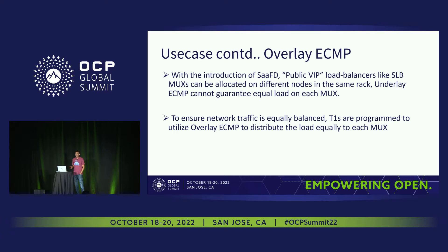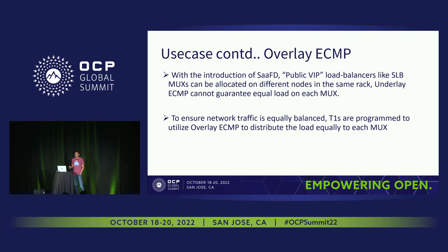The challenge with traditional underlay routing ECMP is that we can't effectively load balance traffic to multiple load balancers under the same Tor. If we use underlay network routing, packets will be load balanced using a standard five-tuple, land on the same Tor, and we can't distribute traffic across different load balancers under that same Tor.